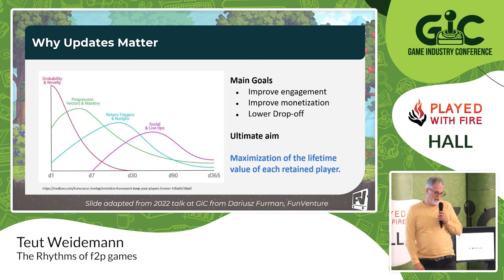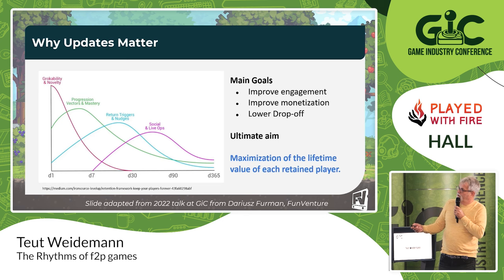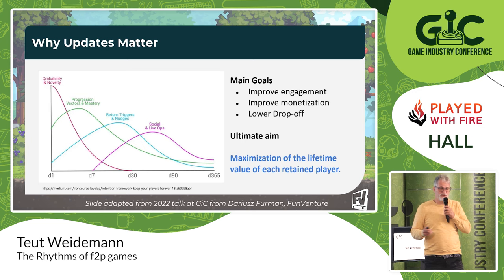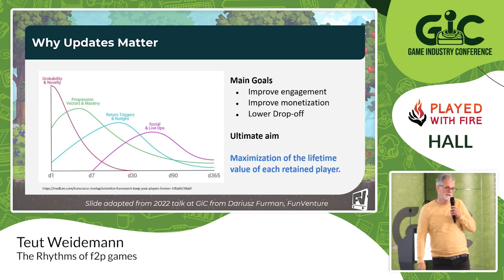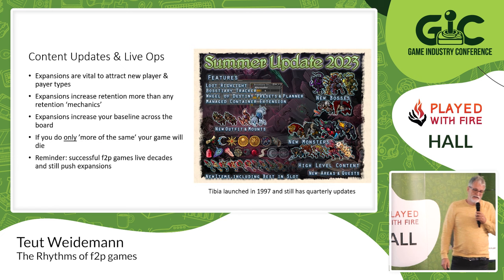This is the normal cycle of online games: replayability, novelty, then progression and vectors of mastery, then return triggers and nudges, then social and live operations. All of them go down over time, and you hope the base is enough to make your game survive. Every single major update you do will start that cycle again. That's how important it is.